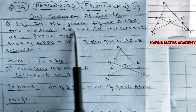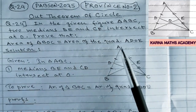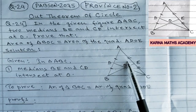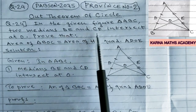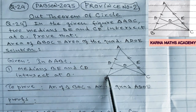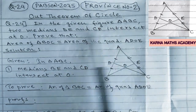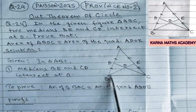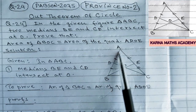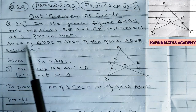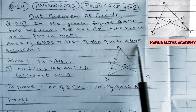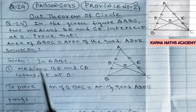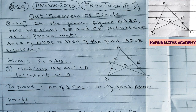In question number 24, in the given figure, triangle ABC has two medians BE and CD that intersect at O. We have to prove that area of triangle BOC is equal to area of quadrilateral ADOE. To get the solution we have to use the relation between the median of a triangle and the areas of triangles.